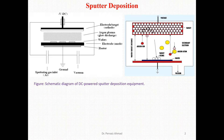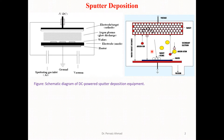So what actually happens in sputtering: we have a source material, that is a target material, and that target material contains the atoms of the material which we want to deposit at the substrate. What we do is introduce the argon plasma — the argon ions are accelerated toward the target to sputter the atoms, and those atoms are then accelerated toward the substrate to deposit a thin film. This is the short introduction of the sputtering process.